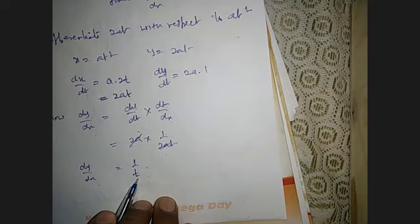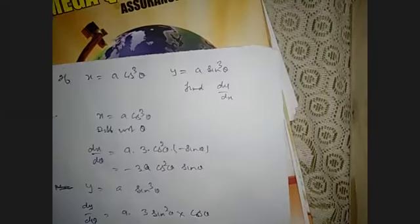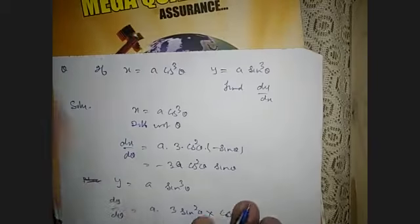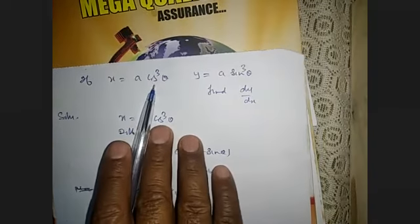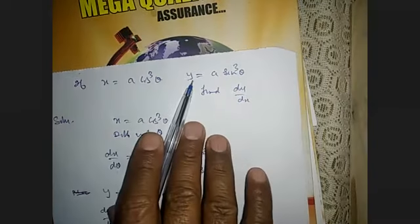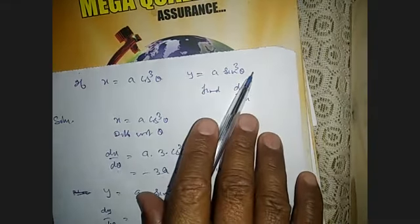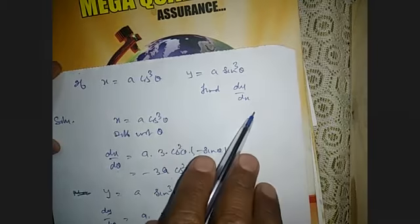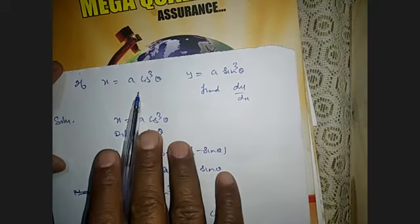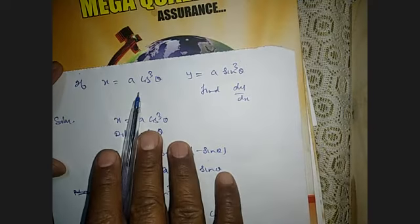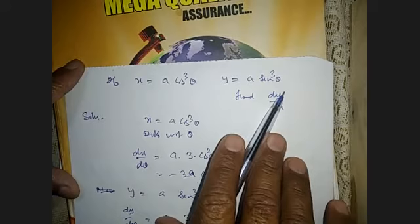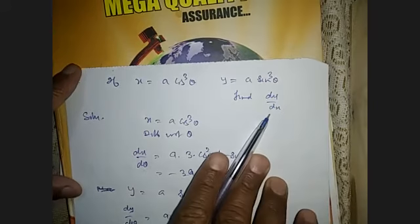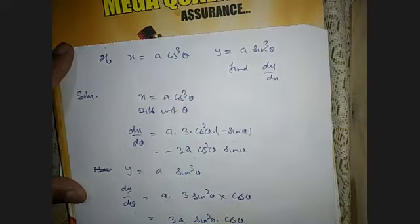Now take the next question: if x = a·cos³θ and y = a·sin³θ, find dy/dx. The same procedure applies — no change.